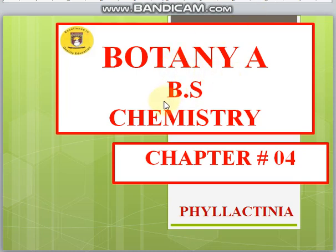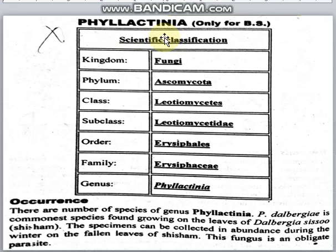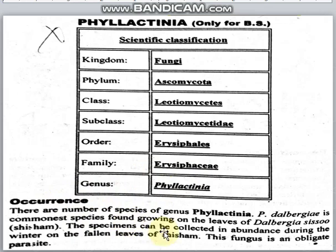My name is B.S. This is Chemistry Chapter 4. Today we will discuss the new type that is Phylactinia. Its classification: Kingdom Fungi, Phylum Ascomycota, Class Leotiomycetes, Sub-class Leotiomycetes, Order Erysiphales, Family Erysiphaceae, Genus Phylactinia.